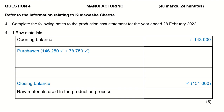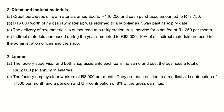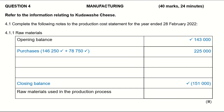That gives us a total purchases amount of 225,000. Then it says that 16,000 worth of milk — a raw material — was returned to a supplier as it was past its expiry date. What we need to do is reduce our direct material cost by the returns of milk, amounting to 16,000.